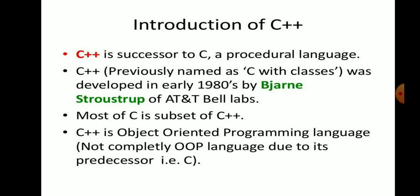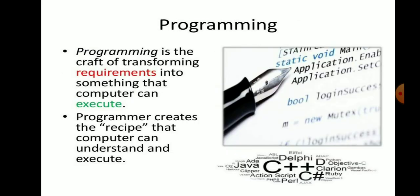C++ is the successor to the C language. It is a procedural language, and C++ was developed in 1980 by Bjarne Stroustrup at AT&T Bell Laboratory. Most of C is a subset of C++. C++ is an object-oriented programming language, though not completely object-oriented due to its predecessor, C. Programming is the craft of transforming requirements into something a computer can execute.